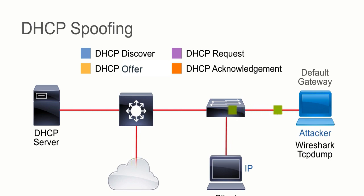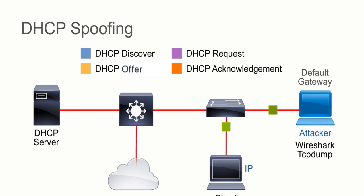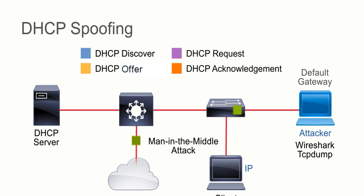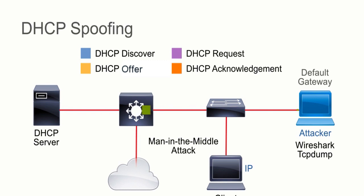The client has no idea that he's now part of another kind of attack. Do you remember what that attack was called? If you're thinking man in the middle, you're correct. So DHCP spoofing attacks spoof that DHCP server and end up leading to man in the middle attacks.